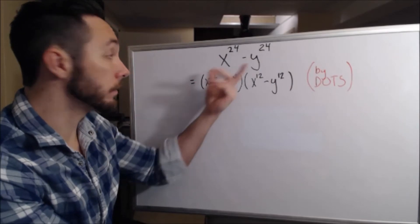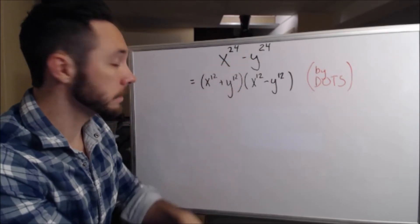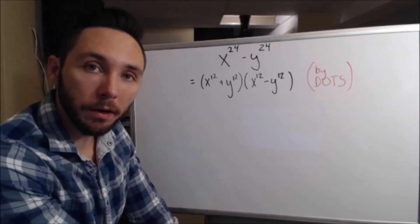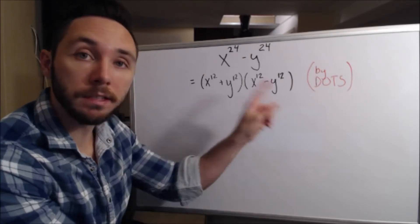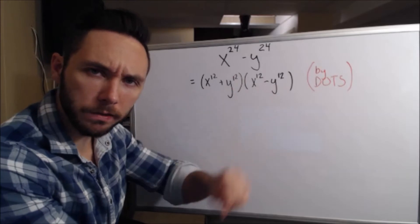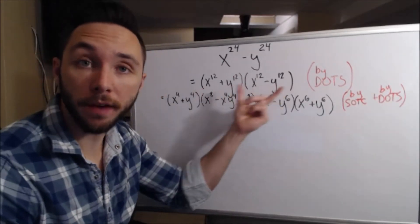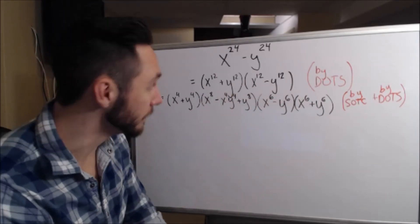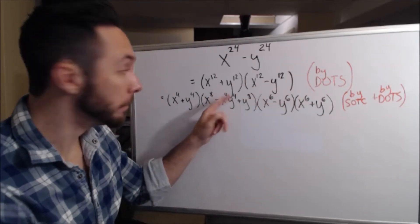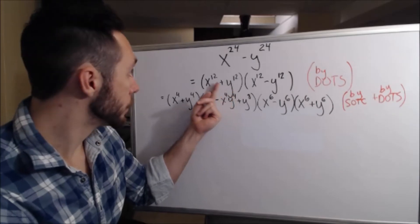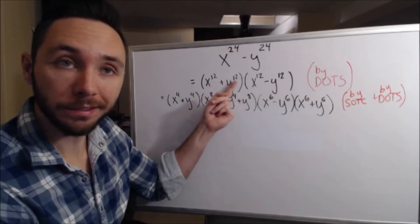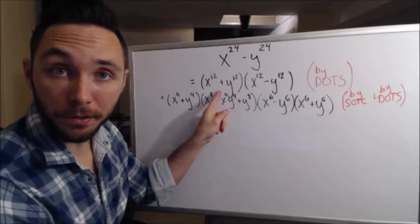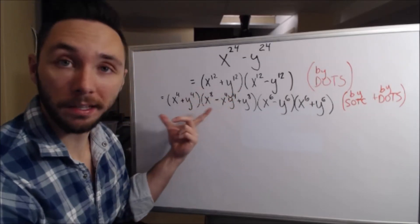So here we have the difference of these two perfect squares is x to the 12th plus y to the 12th multiplied by x to the 12th minus y to the 12th. First step I chose to do is difference of two squares. Next up, I notice I now have two factors, two different expressions. I got to keep going. It's not that easy. Here I notice the sum of two numbers. And if we notice both of these expressions have a power of 12, which is divisible by three, this is sum of two cubes right here. So I went ahead and factored that.